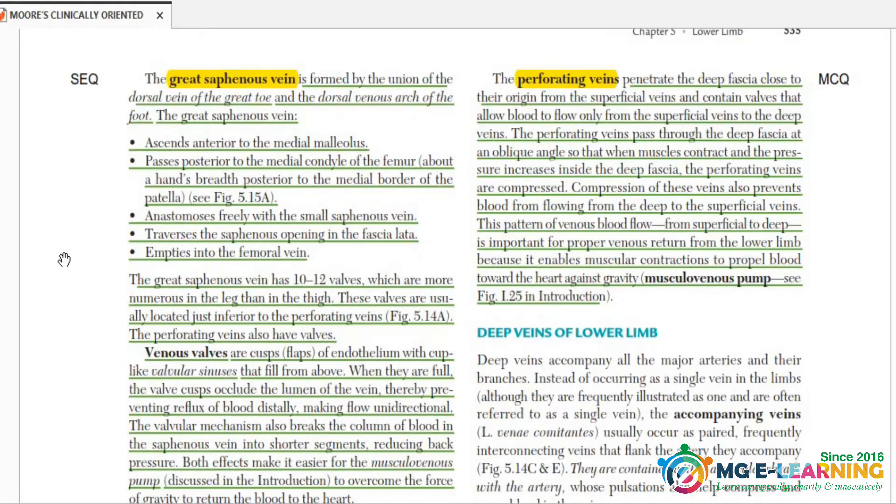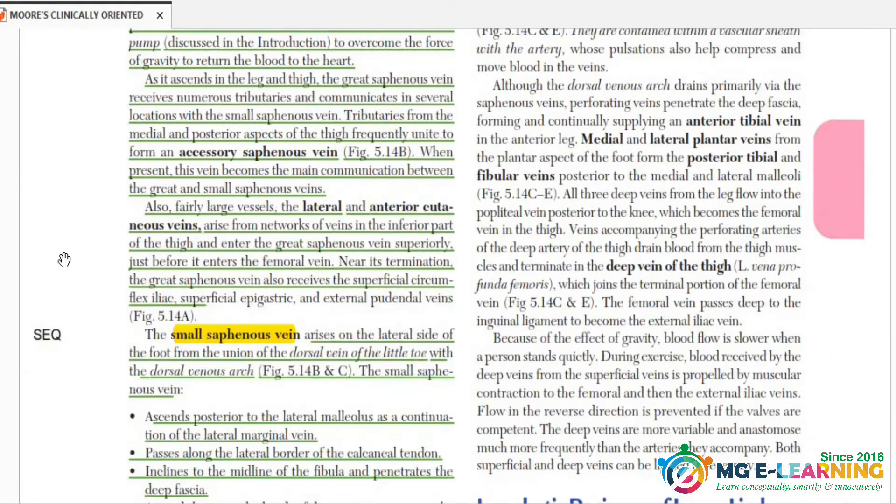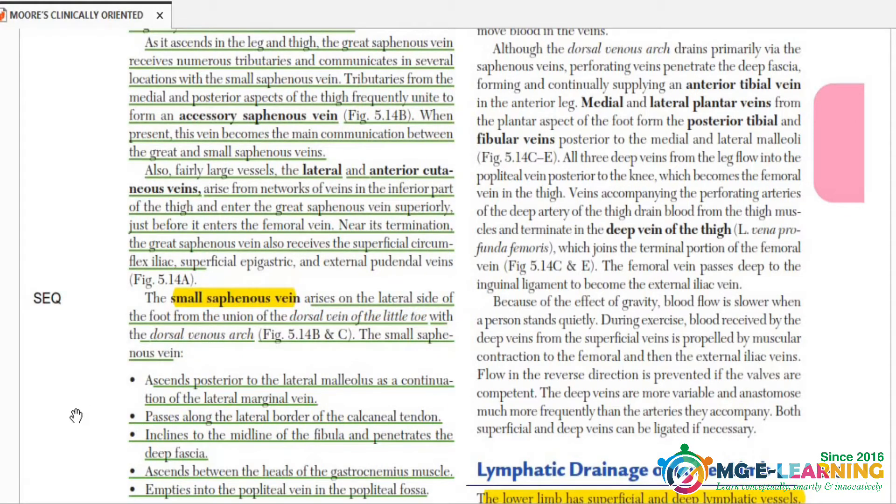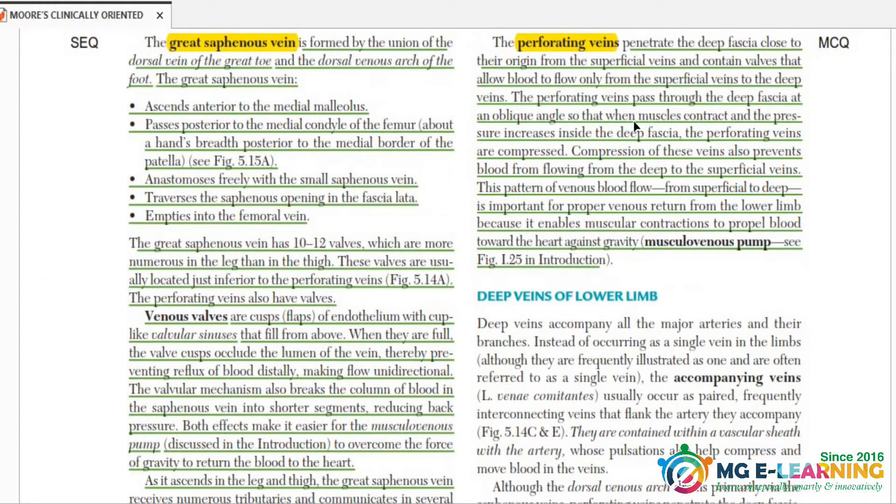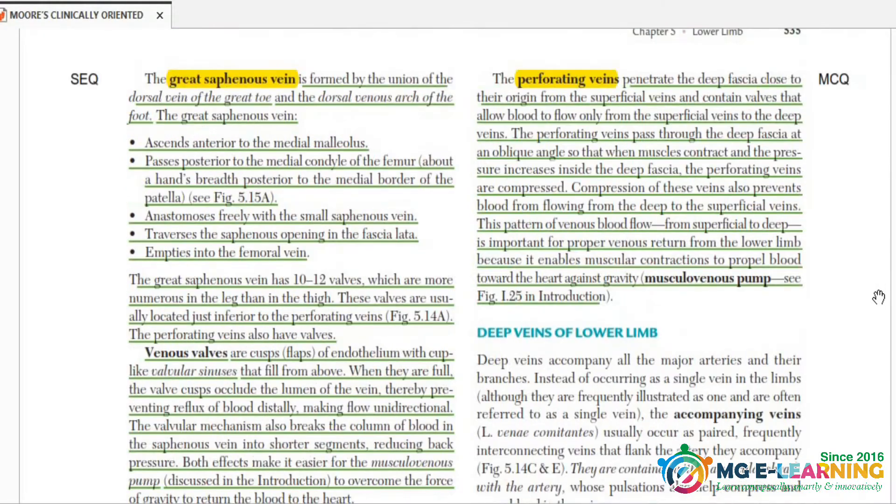Same is the case with small saphenous vein. It is also important for SQ point of view. Now perforating vein, it is not very important, but you have to know it for MCQ point of view.